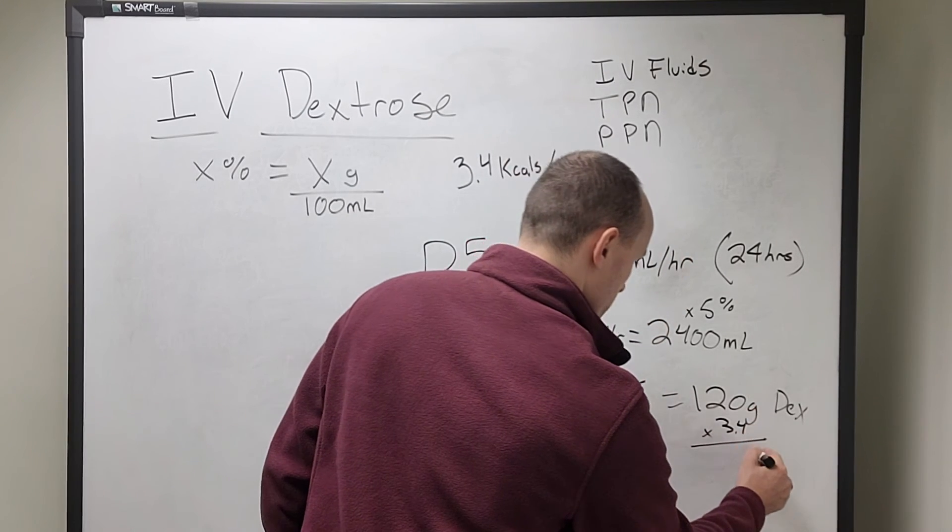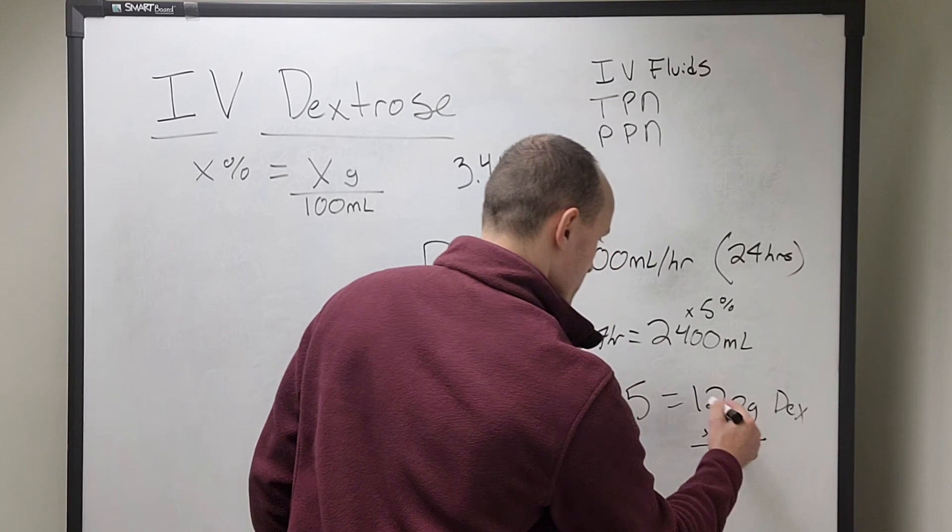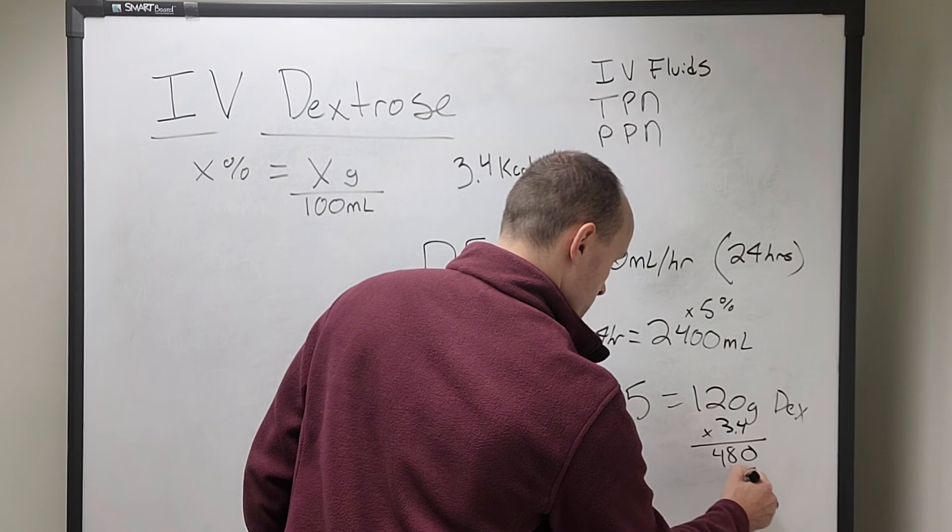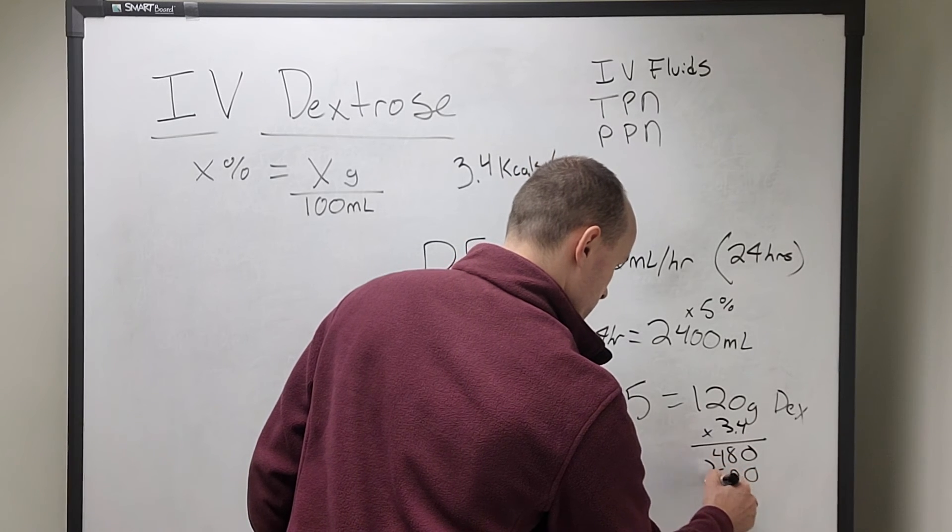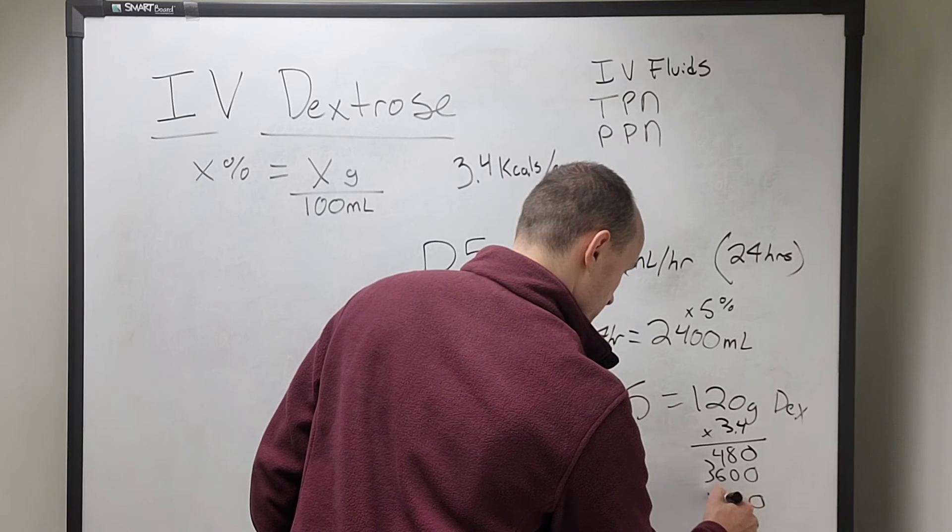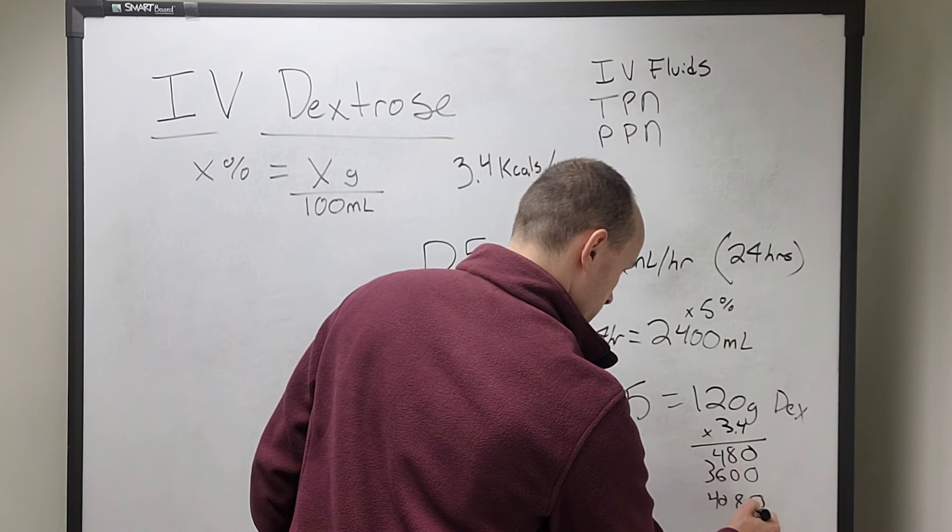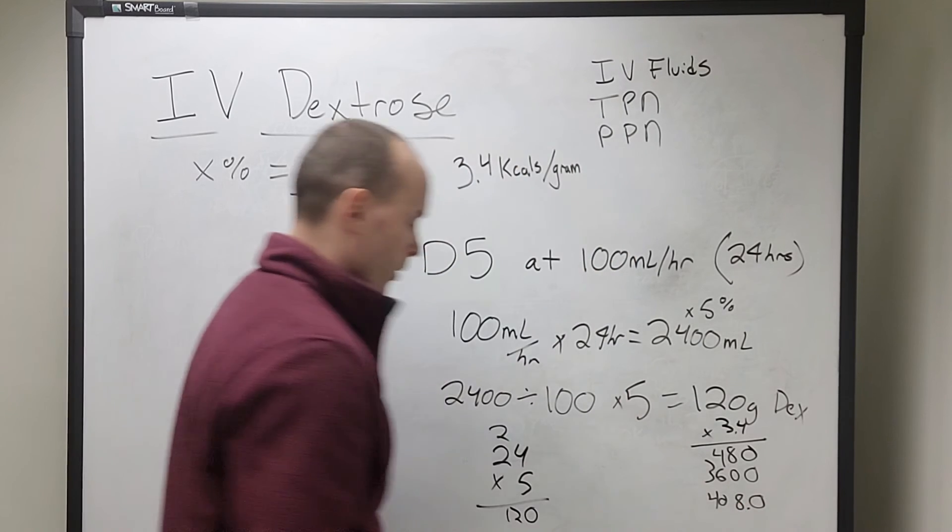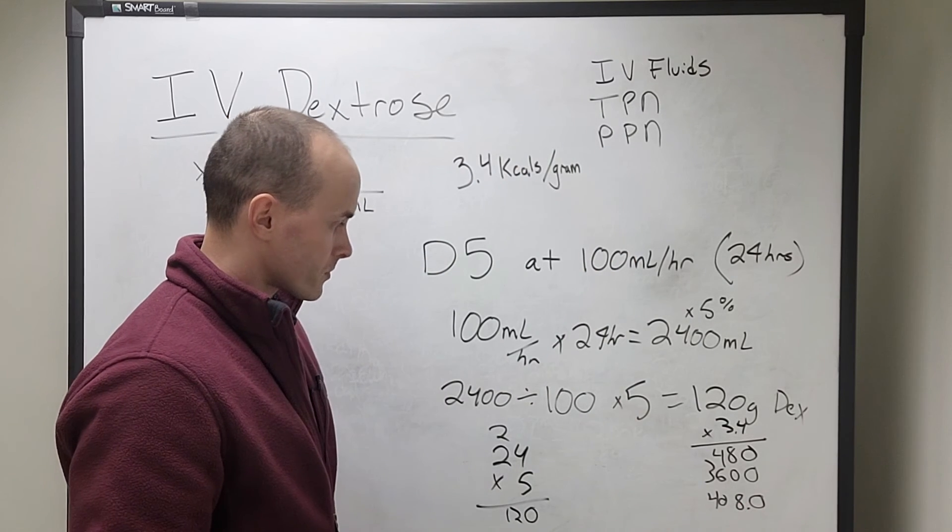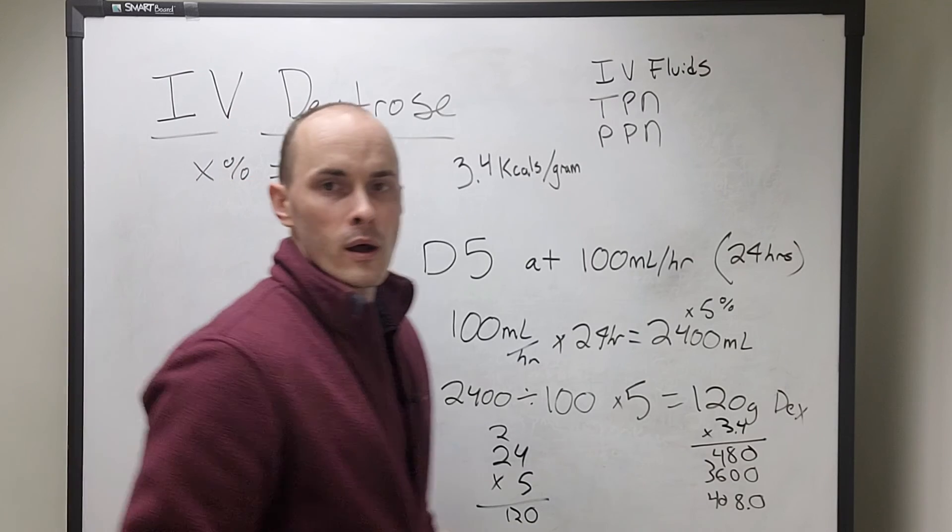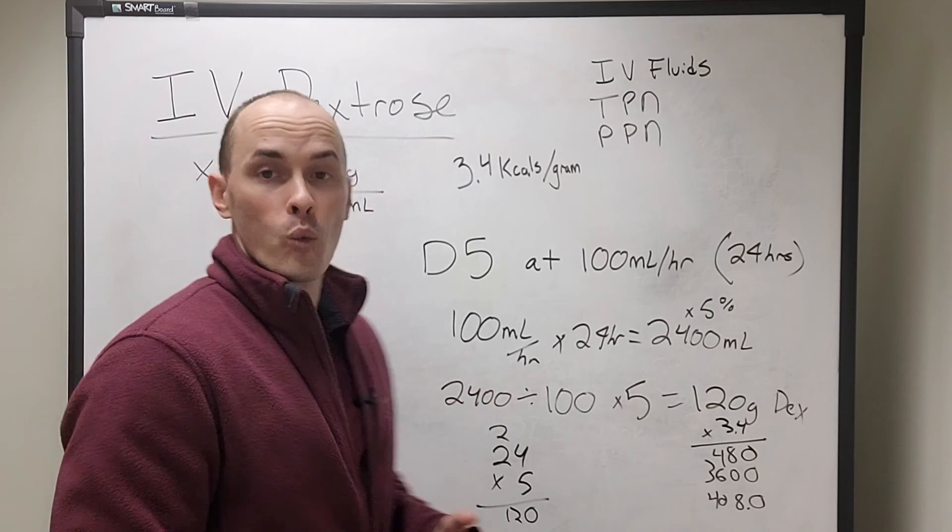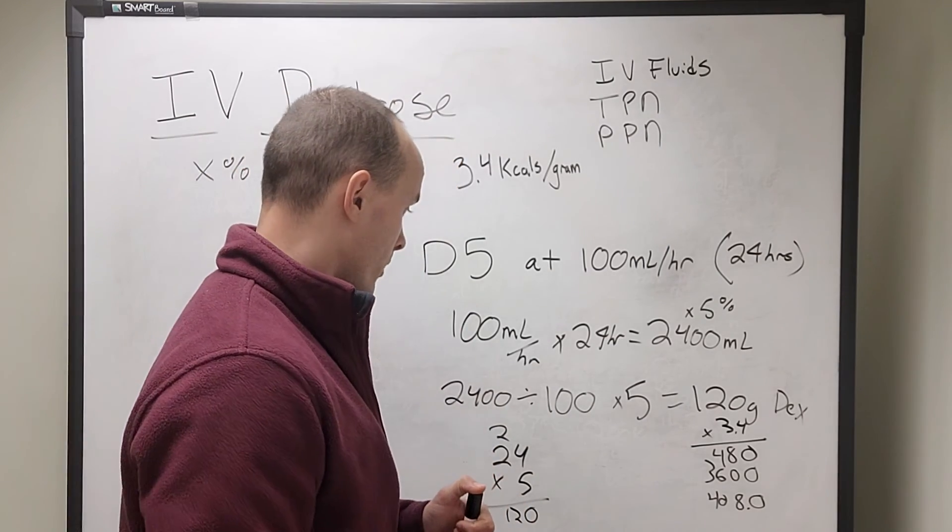And then we take our 120 and we multiply it by our 3.4 calories per gram. We're going to get 408 calories from dextrose daily with D5 running at 100 mils per hour.